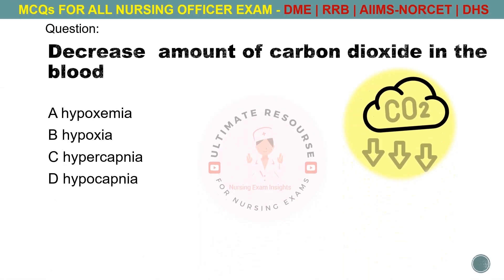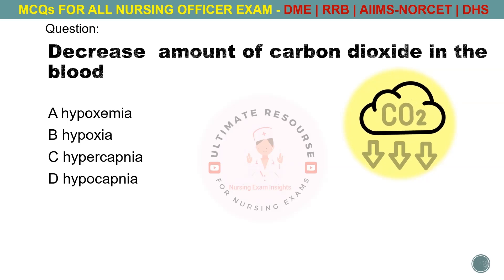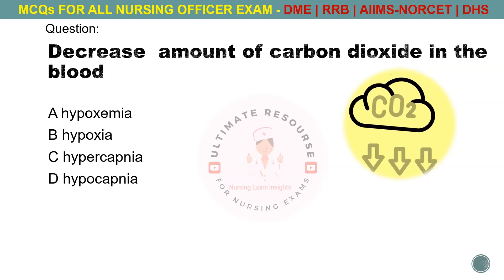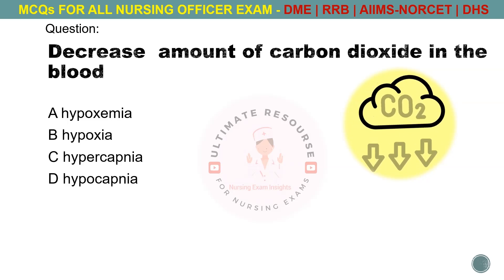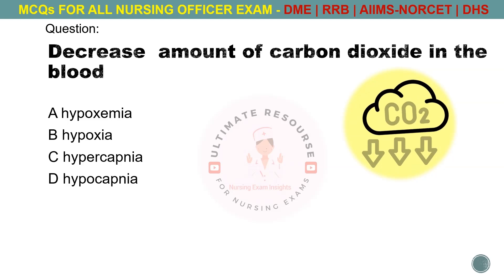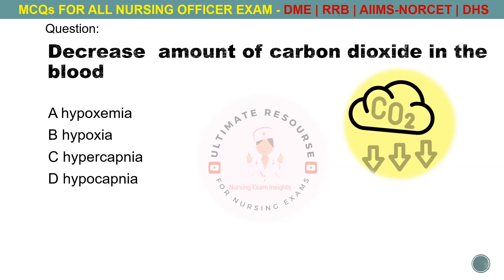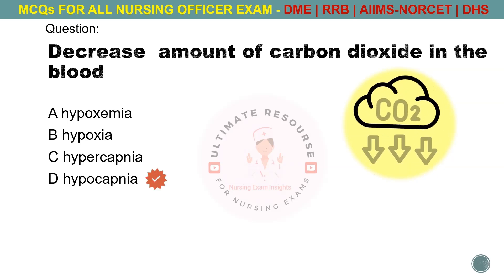Decrease amount of carbon dioxide in the blood. Options are A. Hypoxemia, B. Hypoxia, C. Hypercapnia, D. Hypocapnia. The answer is D. Hypocapnia.